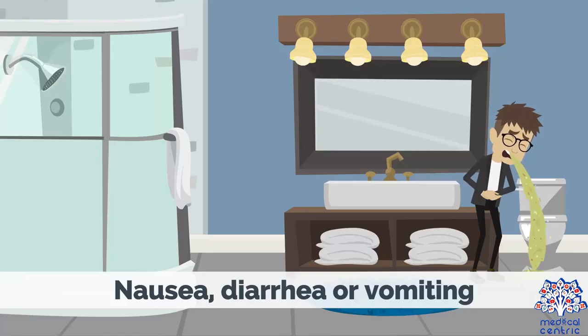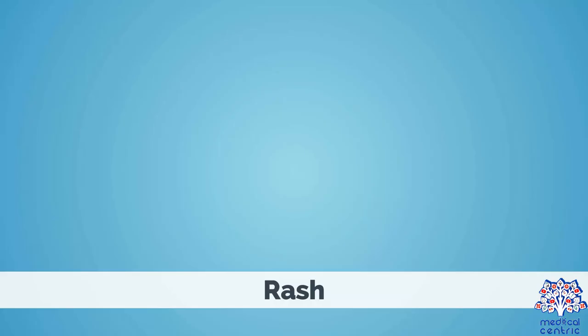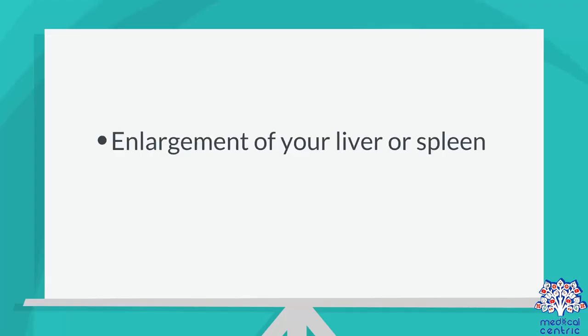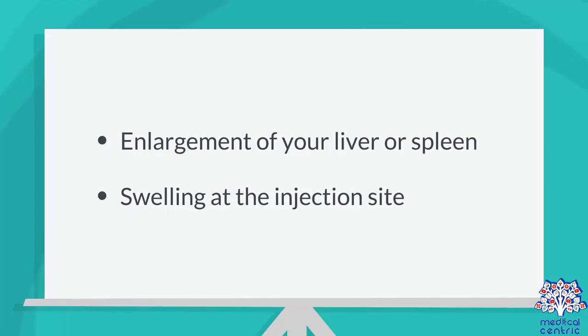Additional acute symptoms include swollen glands, nausea, diarrhea, or vomiting, rash, enlargement of your liver or spleen, and swelling at the injection site.